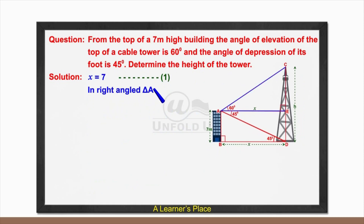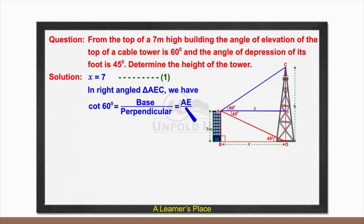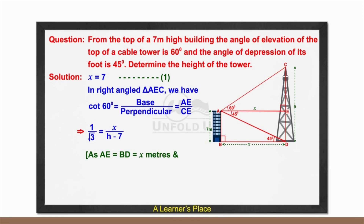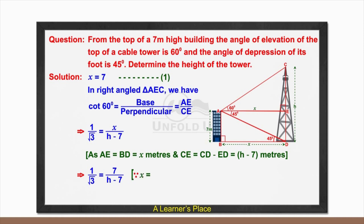In right-angled triangle AEC, cot 60° = AE/CE, which gives 1/√3 = x/(h − 7). Since AE = BD = x and CE = h − 7, substituting x = 7 from Equation 1 gives 1/√3 = 7/(h − 7), which implies 7√3 = h − 7.